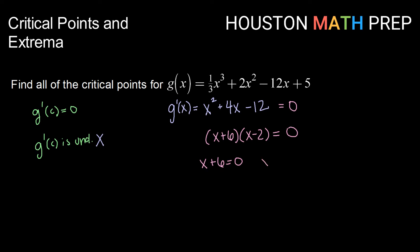Setting our factors separately equal to zero, we get x plus 6 equals zero and x minus 2 equals zero, which gives us two critical points where